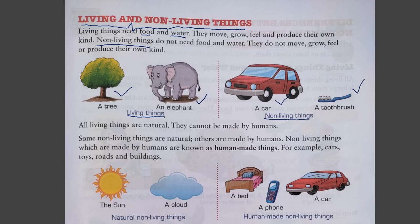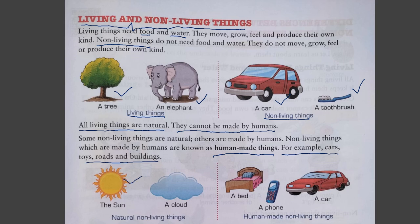Examples of non-living things: a car, a toothbrush. All living things are natural; they cannot be made by humans. Some non-living things are natural, others are made by humans. Non-living things made by humans are known as man-made things, for example cars, roads, and buildings. Natural non-living things include the sun and clouds; man-made non-living things include a bed, a phone, and a car.